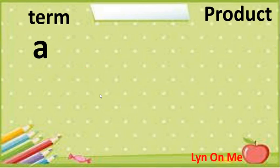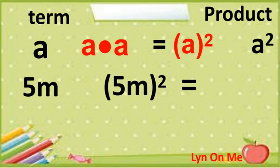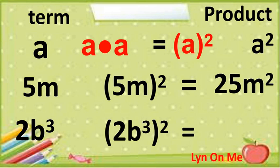Let us have the term A. What is A times A, or the square of A? It is A squared. Next, 5M: what is the square of 5M, or 5M times 5M? The result is 25M squared. How about 2B cubed? The square of 2B cubed is 4B raised to 6.